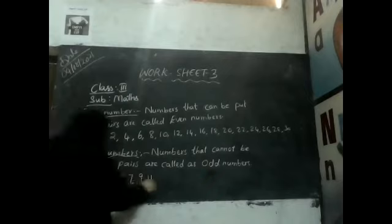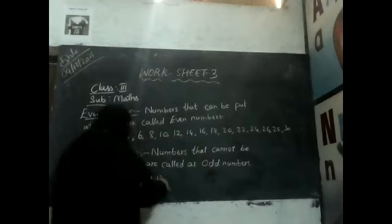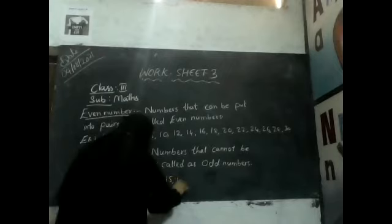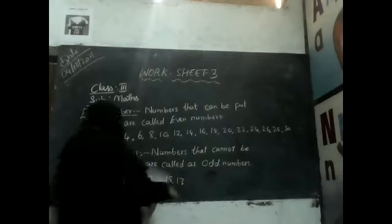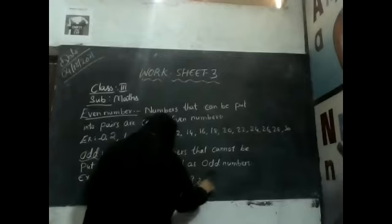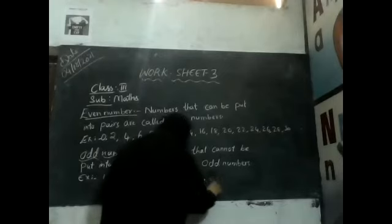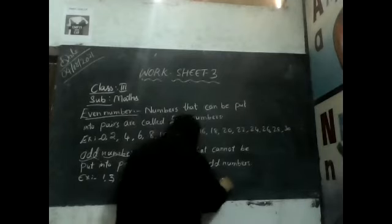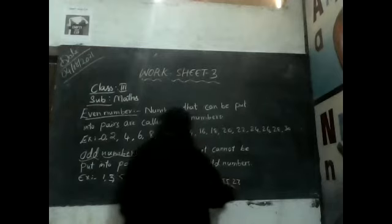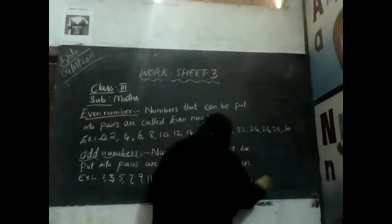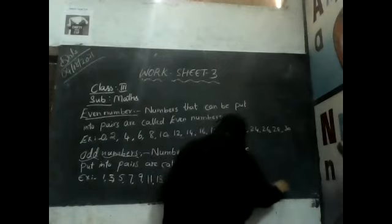10 is the even number. Next, 11. 12 is the even number. 13. 14 is the even number. 15. 16 is the even number. 17. 18 is the even number. 19, 20. 20 is the even number. 21. 22 is the even number. 23 is the odd number. Continuing this pattern through 29, 30, 31.